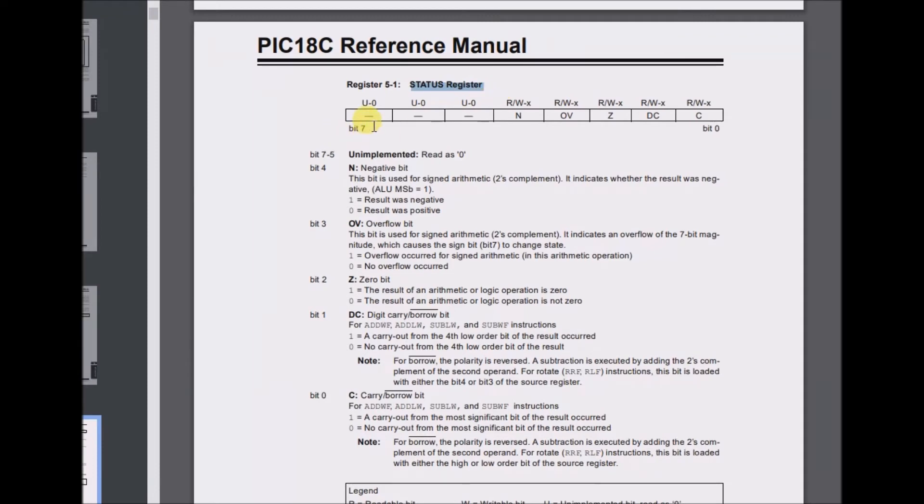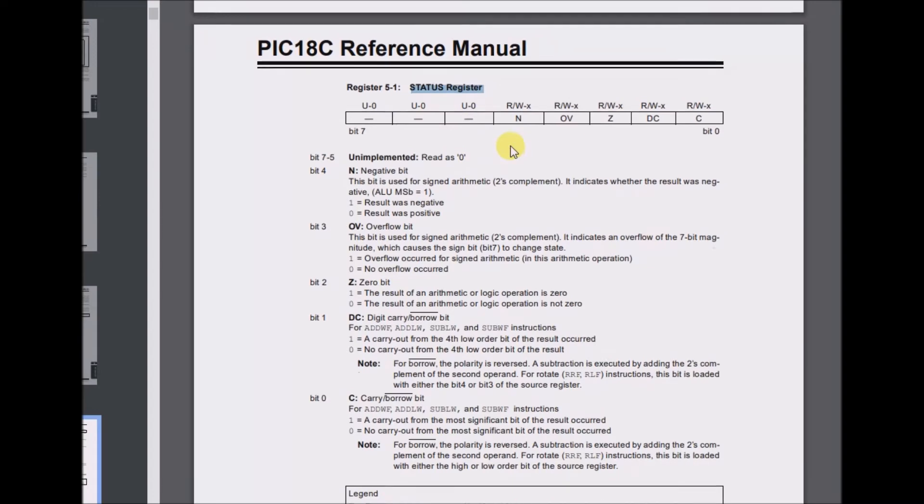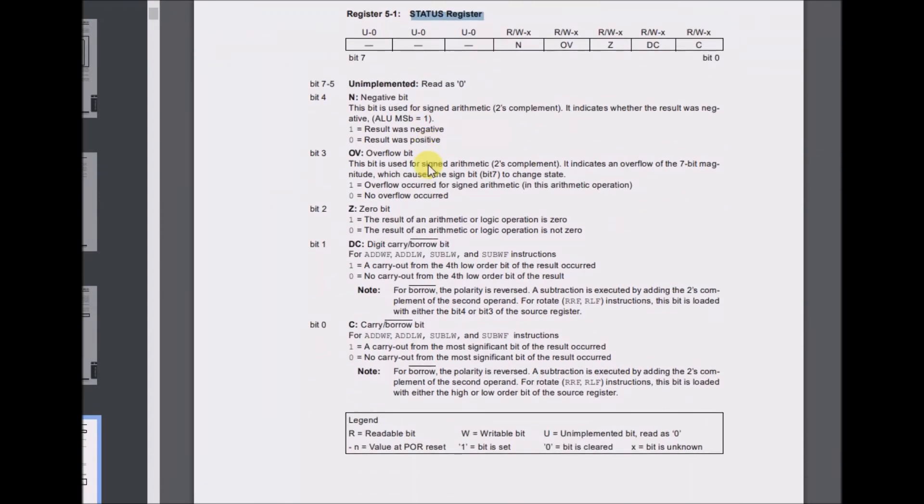Here on page 118 is the register for the status register. As I have read, the first three bits are unimplemented. The negative bit is used for signed arithmetic, two's complement. It indicates whether the result was negative. ALU MSB equals 1 means the result was negative, 0 means the result was positive.